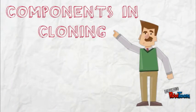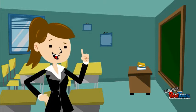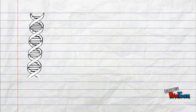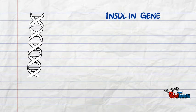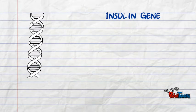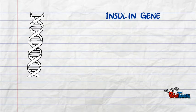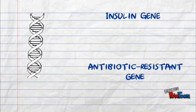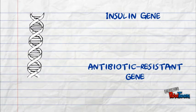There are a few important components in the cloning process. The first is the gene of interest. Normally, the gene of interest or insert is selected because it can produce insulin or is resistant to antibiotics, like insulin gene or antibiotic resistant gene.